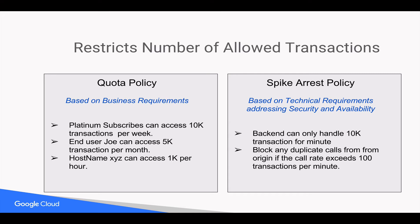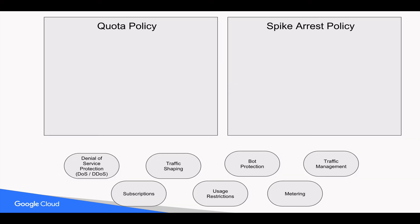Having said that, let's analyze a few use cases and, based on the attributes we've learned, try to map these use cases to either a Quota policy or a Spike Arrest policy. Here are the set of use cases.